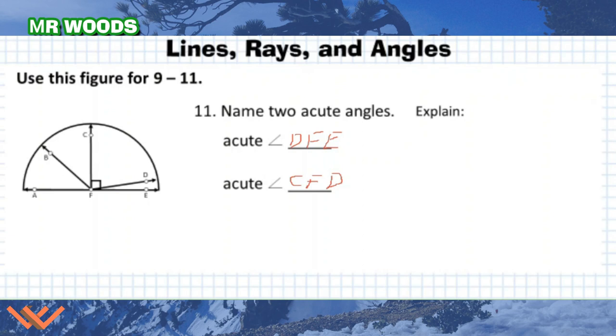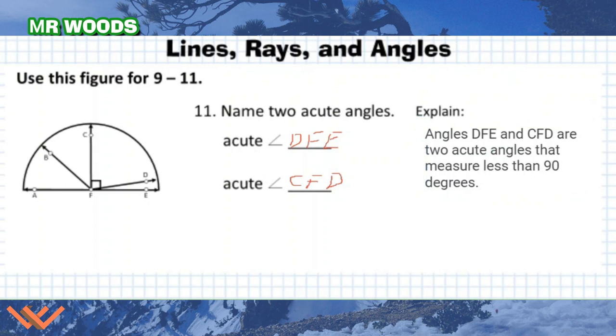Pause the video and see if your explanation matches mine. Welcome back. This is for the final problem here. Angles DFE and CFD are two acute angles that measure less than 90 degrees. In fact, CFD is definitely less than 90 because CFE is 90 degrees. And conversely, DFE is also less than 90 because that's the piece that's missing from here to make it 90.